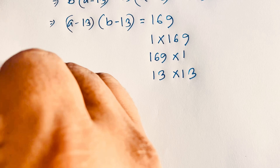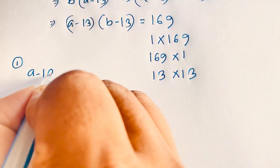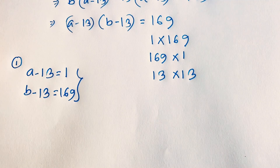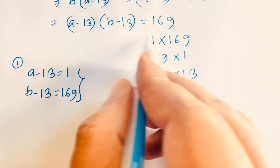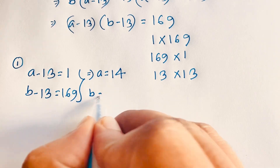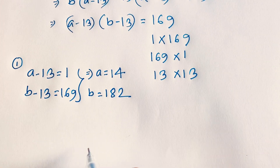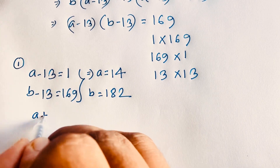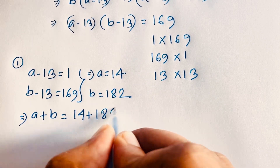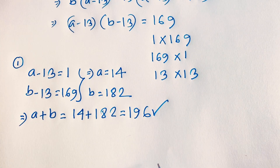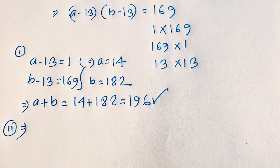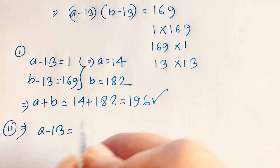Case 1: a minus 13 equals 1 and b minus 13 equals 169. So a equals 14 and b equals 182. Our question asks a plus b, so a plus b equals 14 plus 182 equals 196. This is our answer for case 1.